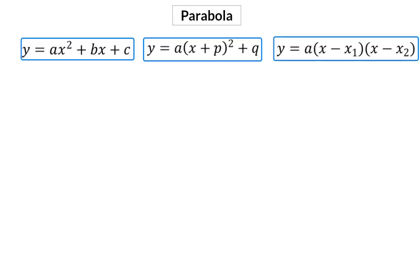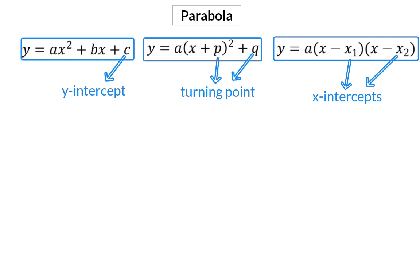The standard equation of a parabola has three forms. In the first form you can clearly see the y-intercept, the second form indicates the turning point, and the third form shows you the x-intercept. But in grade 10 we only focus on the form y equals ax squared plus c.